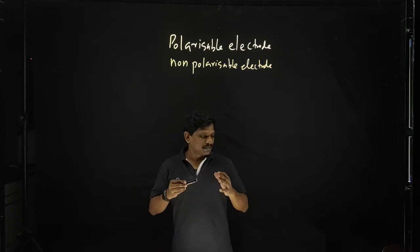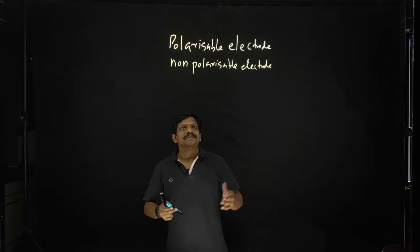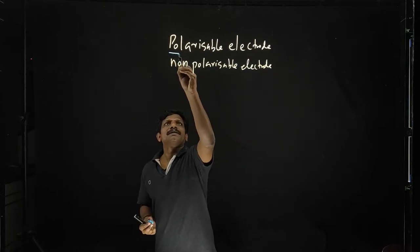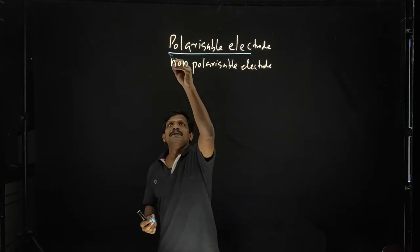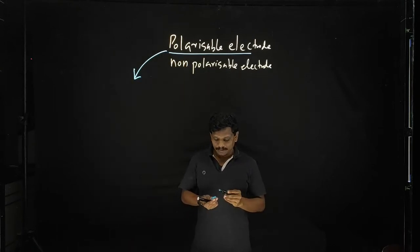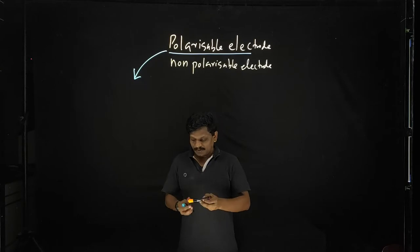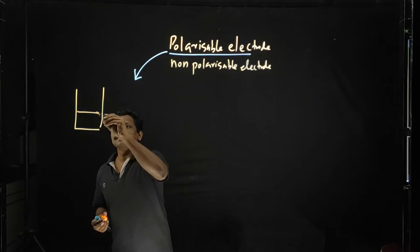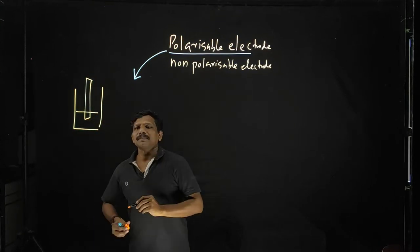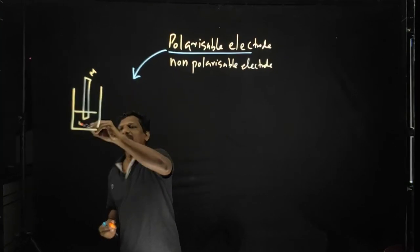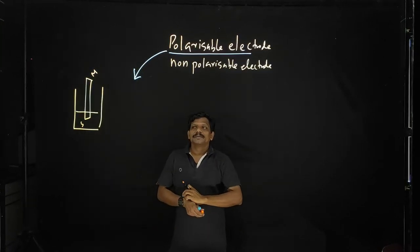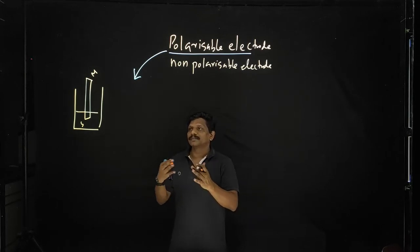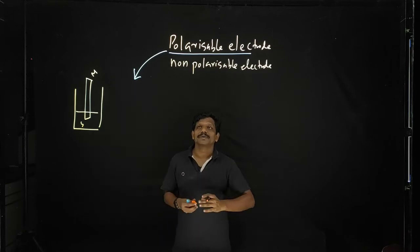We will check what we mean by a polarizable electrode and a non-polarizable electrode. First we can check about the polarizable electrode. Suppose you consider the solution and your metal kept here — this is your metal and this is the solution. We already discussed about the scenario, what happens at the interface.